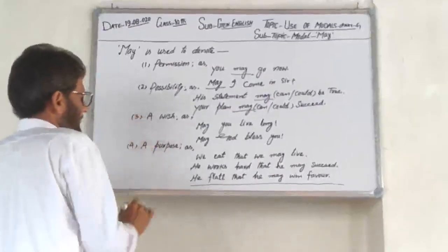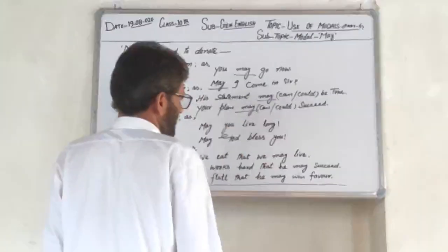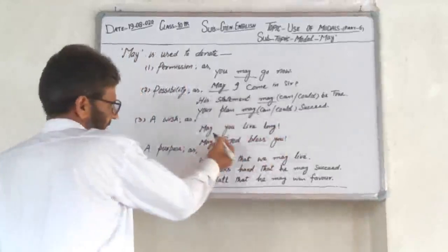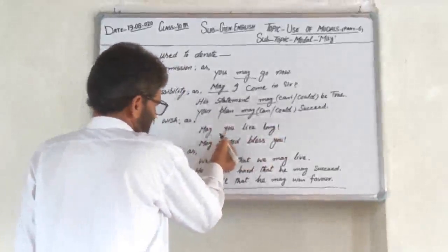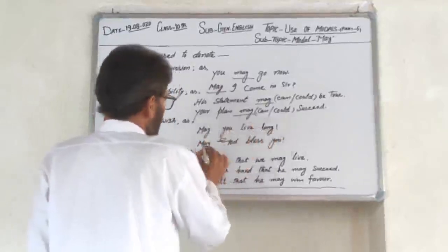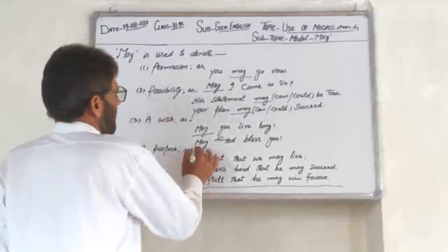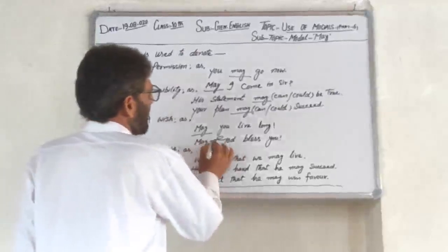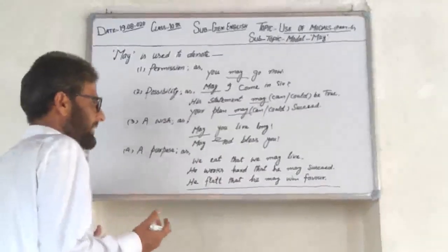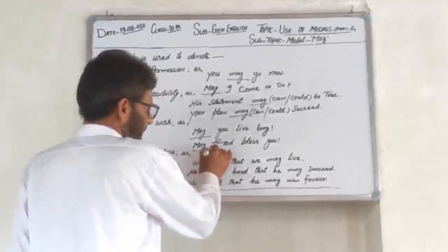Number three — A Wish. جیسے 'May you live long.' یہاں پے wish کا مطلب استعمال ہے — 'May you live long.' اس صورت میں بھی ہم Modal May کا استعمال کر سکتے ہیں۔ اور ایک اور مثال: 'May God bless you.' یہاں پے بھی ہم wish ظاہر کرتے ہیں، تو Modal May کا استعمال کیا۔